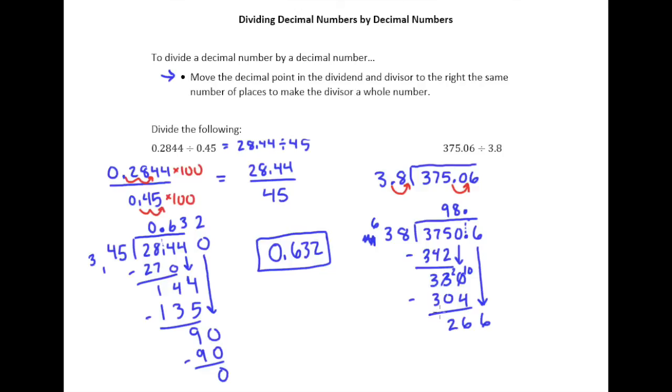38 goes into 266. 8 times 38 was 304, and we need to try to fit it into 266. So maybe 7 will work. Might be just slightly too big, but we'll try it. 7 times 8 is 56, 7 times 3 is 21 plus 5 is 26. Oh, what do you know? That's nice. So there's our remainder of 0 there. So our answer is 98.7.